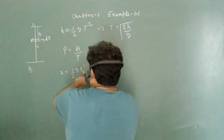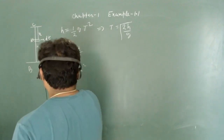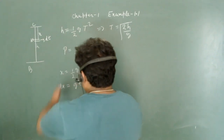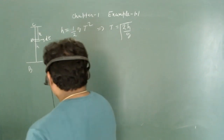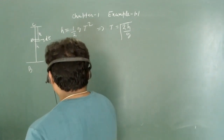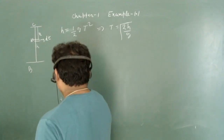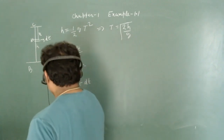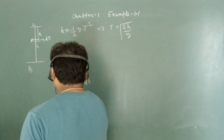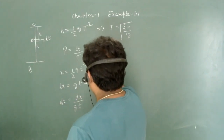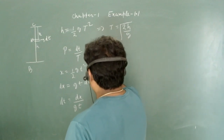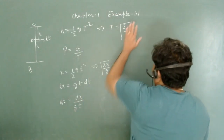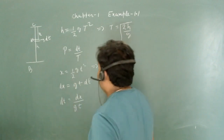Differentiating x = ½gt² gives dx = gt·dt. So dt = dx/(gt). Substituting t = √(2x/g), we get dt expressed as a function of x. Capital T is also written as a function of h, so we can now write the probability that the particle is found between x and x+dx.